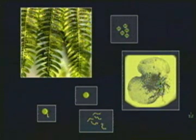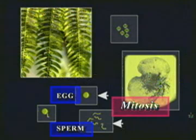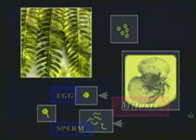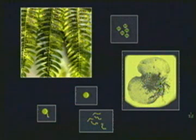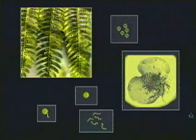The gametophyte makes gametes — haploid eggs and sperm cells — by mitosis and cell division. Unlike spores, which develop without fertilization, the sex cells must fuse together to create a fertilized egg, or zygote, from which grows a new sporophyte plant.